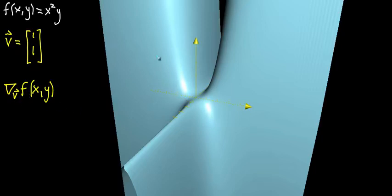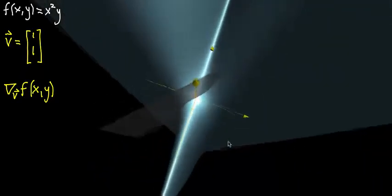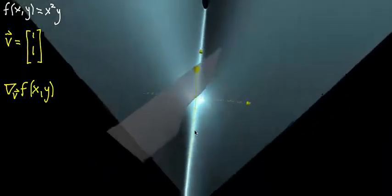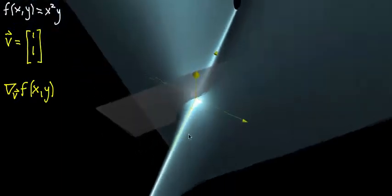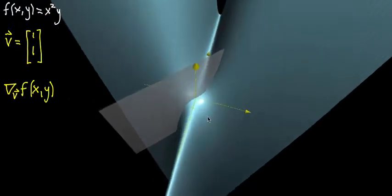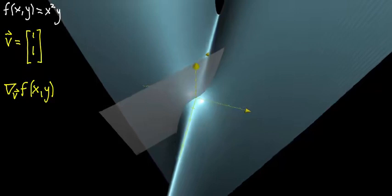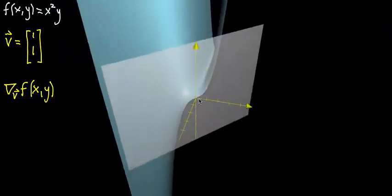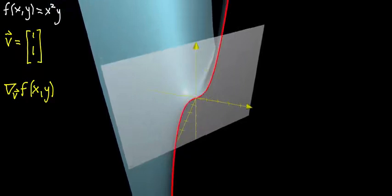You can imagine slicing this graph by some kind of plane, but that plane doesn't necessarily have to be parallel to the x or y axes. That's what we did for the partial derivative — we take a plane representing a constant x or y value. But here it's a plane that tells you what movement in the direction of your vector looks like. I'm going to slice the graph along that plane and color in where the graph intersects that slice.